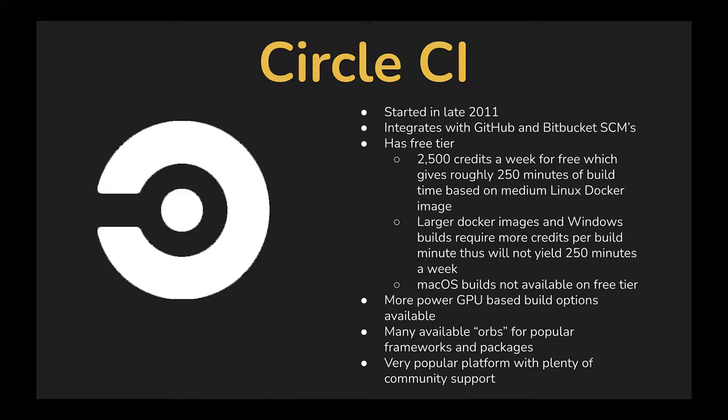CircleCI does not offer macOS builds on the free tier at all, so if you need macOS builds and want to stay on a free tier, CircleCI doesn't offer that. They do offer more powerful GPU-based build images for more intensive builds. There are many available orbs or plugins for popular frameworks and packages such as AWS CLI. One example is Sonar Cloud — you just plug in the orb and one little line of configuration, and it'll automatically do security scanning of your code if you have a plan with Sonar Cloud.